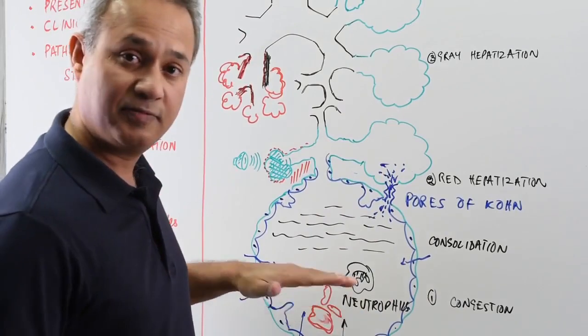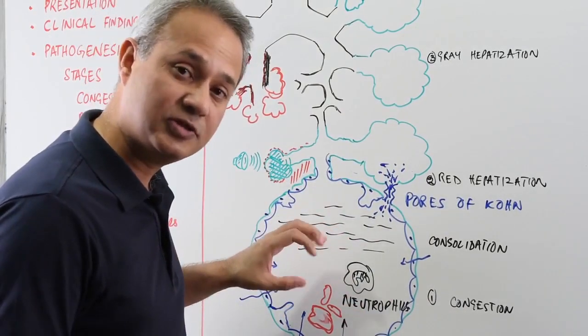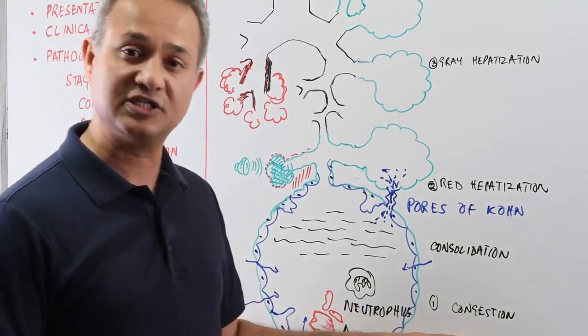Of course, the neutrophils are here, macrophages are here. Fibrinaceous material is there, proteinaceous material is there. Pathogen itself is present there. Some dead cells are present there. So this is the congestion.